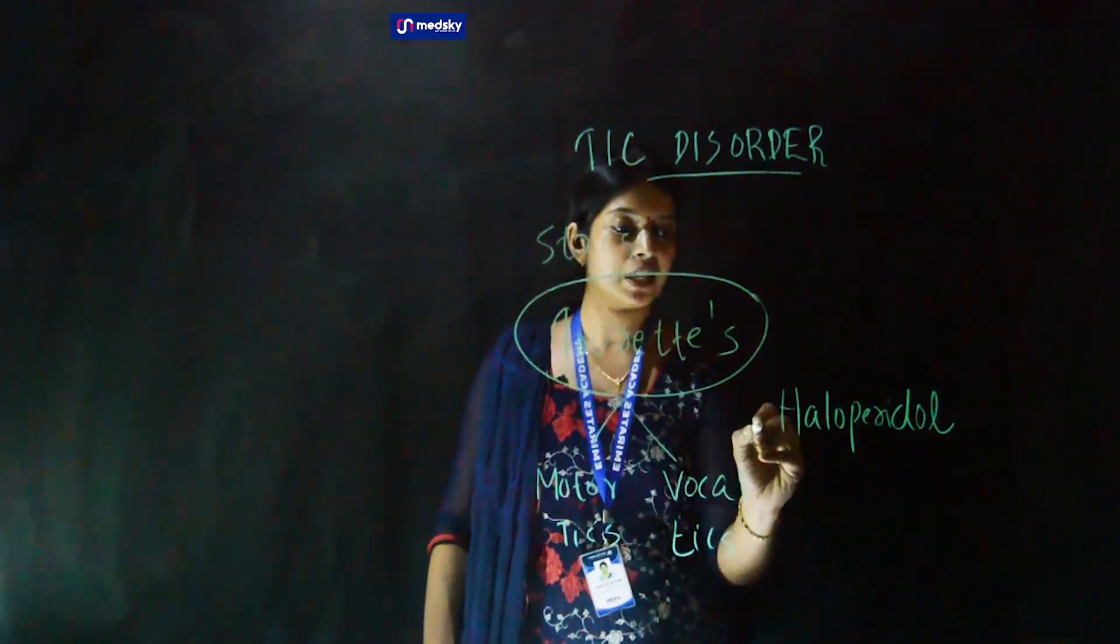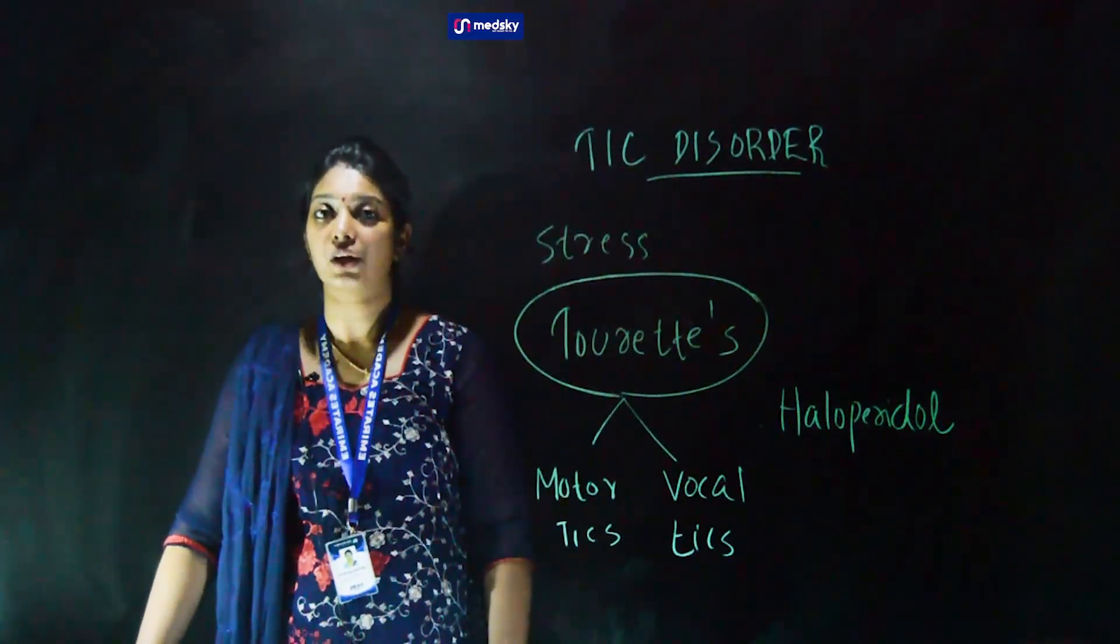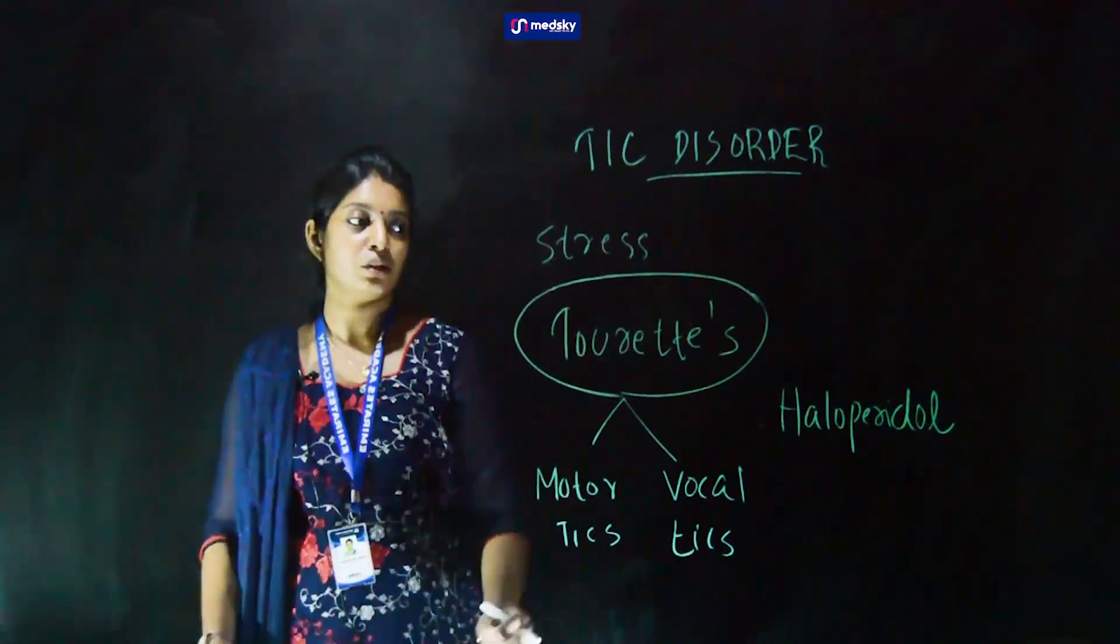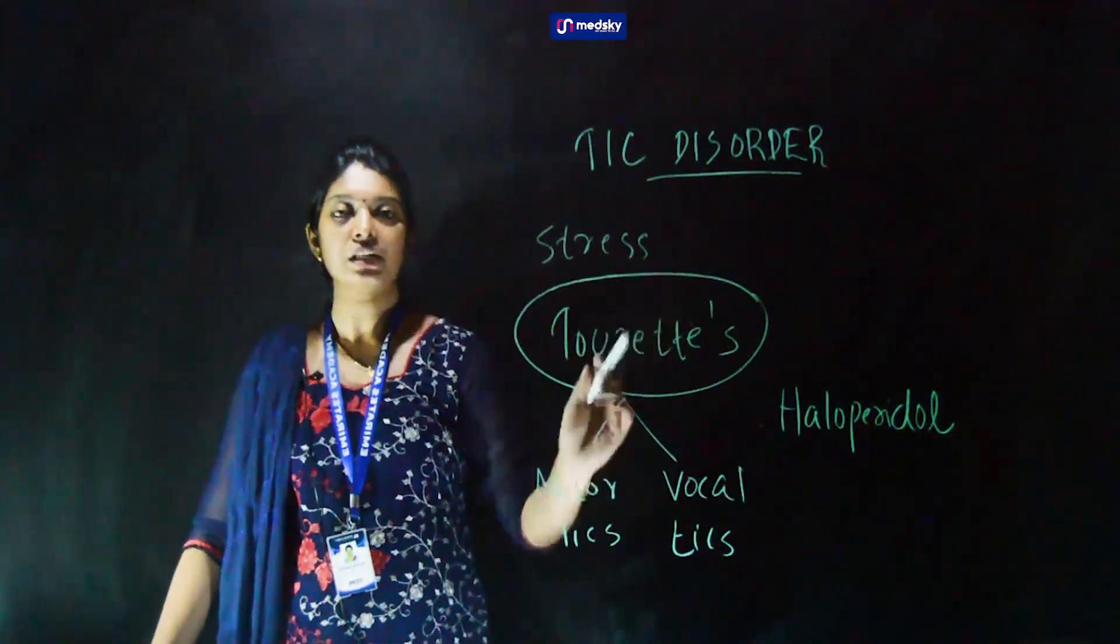This medicine helps to decrease the level of dopamine in the brain. As we discussed earlier, dopamine is a neurotransmitter and regulates movement. So we administer haloperidol and it helps to control the tic disorder.